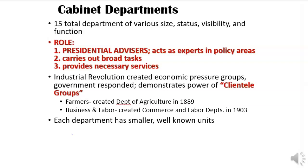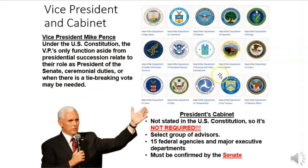All of these cabinet departments have smaller units under them. The heads of each department have to be confirmed by the Senate because the Senate has confirmation power. But remember that the cabinet is not required — it's not in the Constitution. It was just started by George Washington and everybody since then has gone with that tradition.